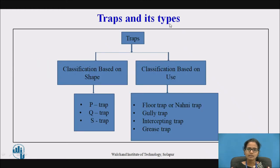Traps and their types. Traps are U-shaped fixtures that have a water seal in them. The water in the trap creates a water seal which prevents sewer gas from passing from the drain pipes into the occupied space in the building.